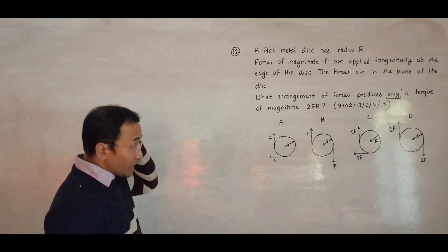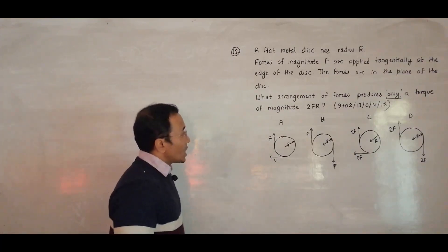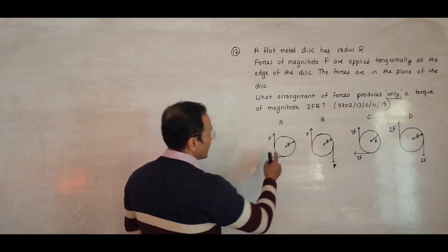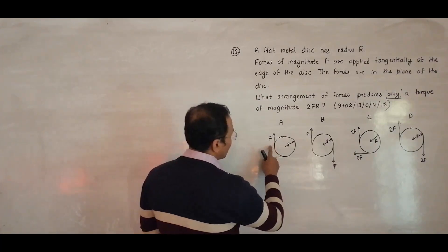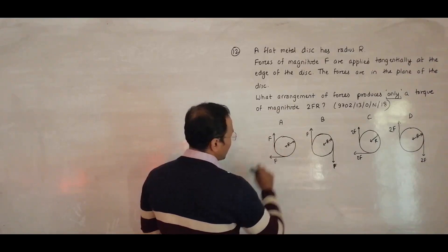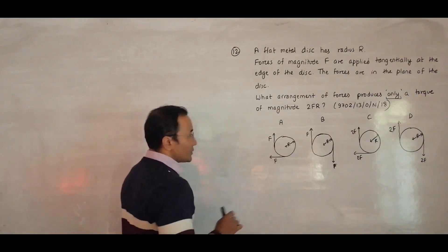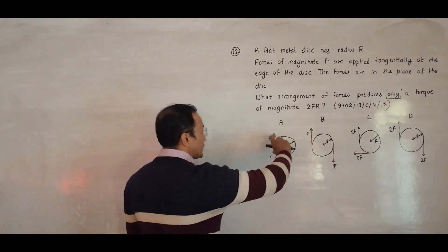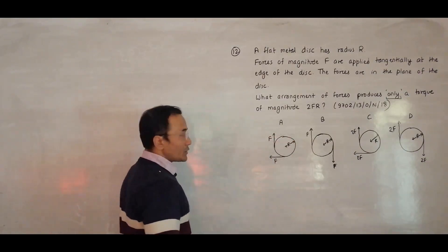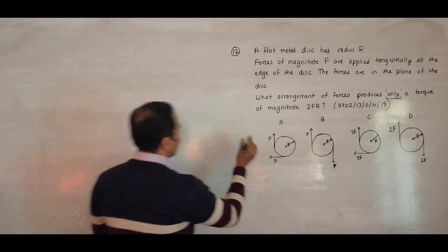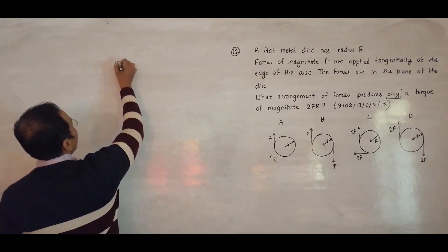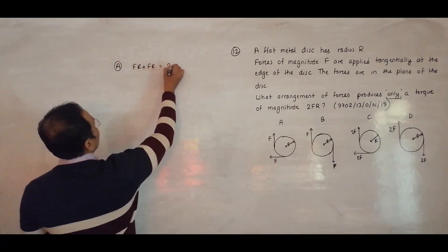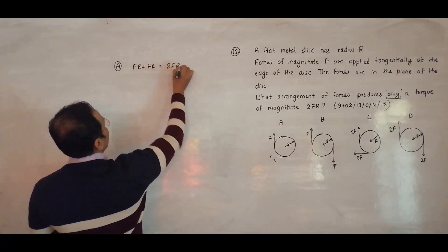In the first diagram, choice A, both forces act clockwise. The torque given by the first force equals F×R, and the torque given by the second force also equals F×R. So the total torque is FR + FR = 2FR.